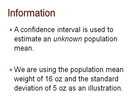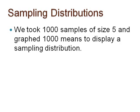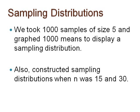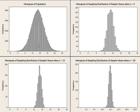In this example, we took 1,000 samples of size 5, found each sample's mean, and graphed 1,000 means to display a sampling distribution. We also constructed the sampling distributions when n was 15 and 30. Here are those sampling distributions. Let's work with the samples of size 30.